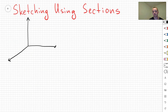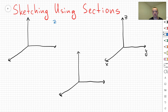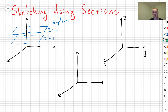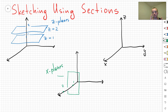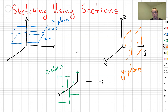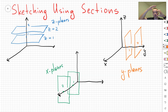We can't always sketch a surface by guessing or using free variables, especially when the equation involves all variables. In that case, we use sections. We take planes parallel to the xy-, xz-, and yz-planes, find their intersections with the surface, and put those sections together to visualize the surface. For example, with a sphere: moving a horizontal plane from the top downward gives an empty set, then a point, then circles of increasing size, then decreasing, then a point, then empty again — that's the idea of sections.